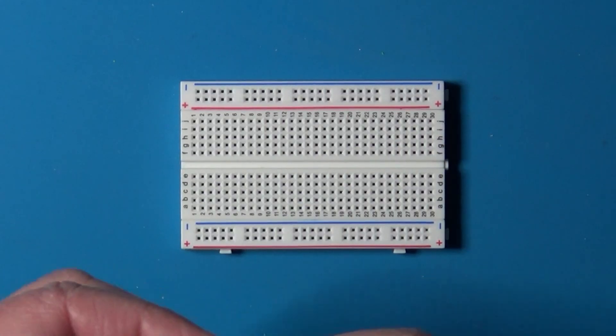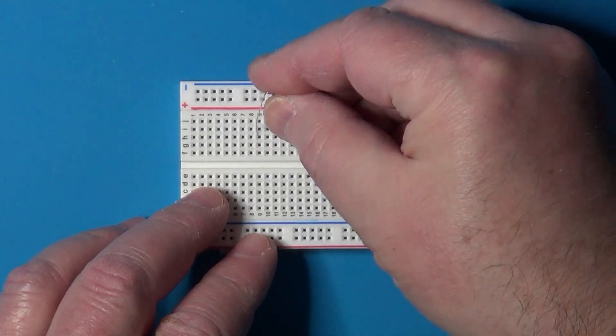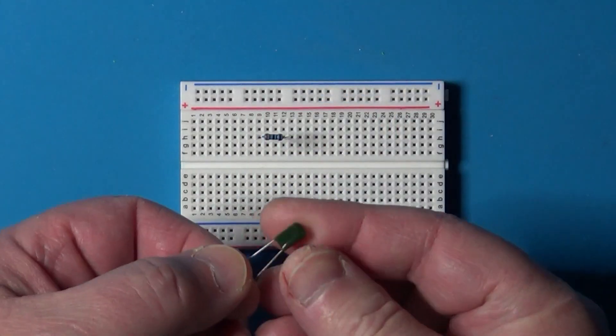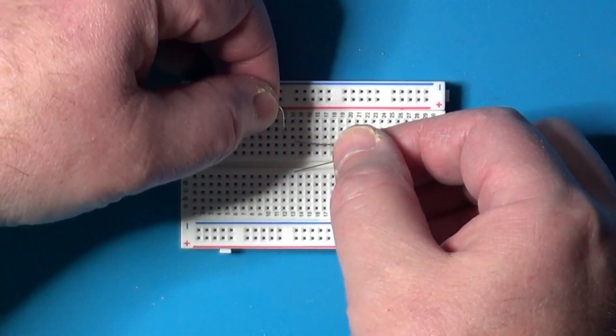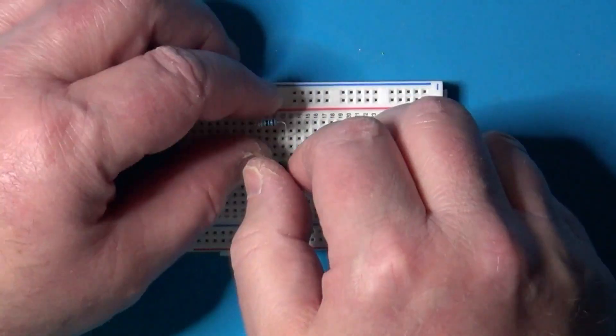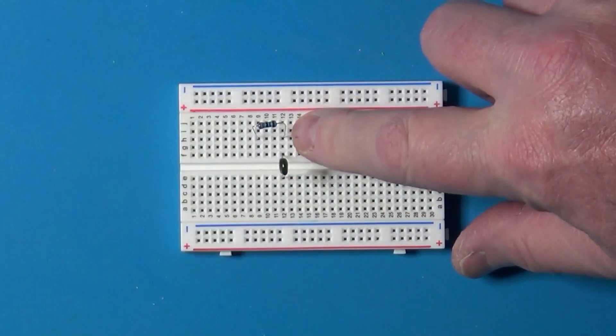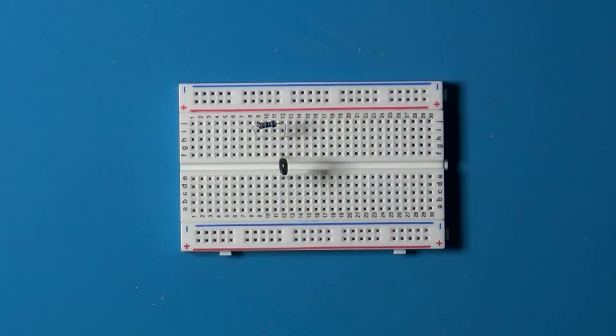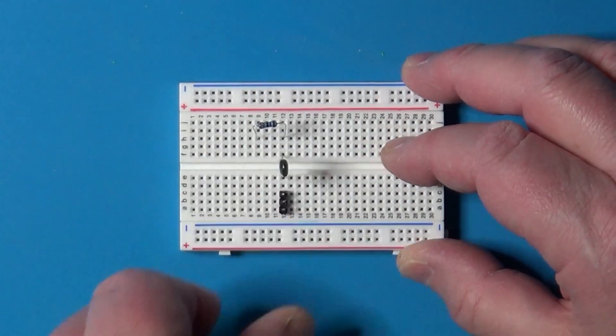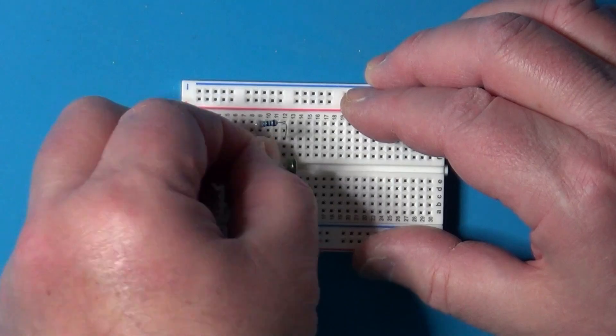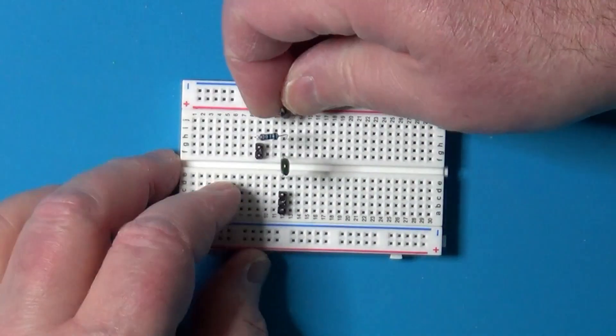So this is the 33k resistor, and this is the 4.7 nF capacitor, and together they form the filter we just calculated. The input is between these two points, and the output is between these other two points. The common part is the reference point or ground connection. We will use these pins as the ground, these for the input, and these for the output.